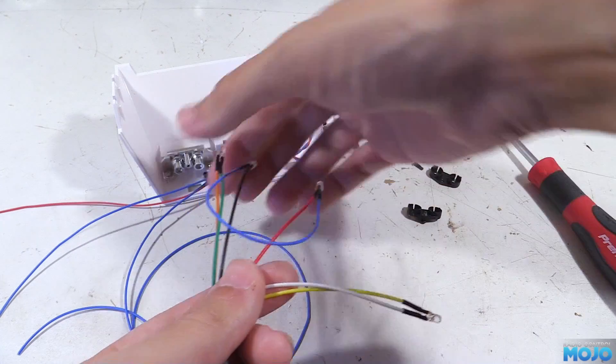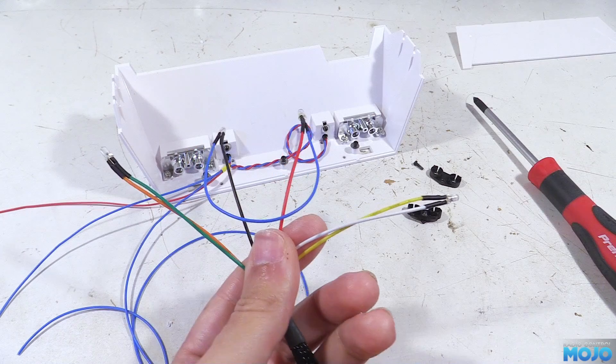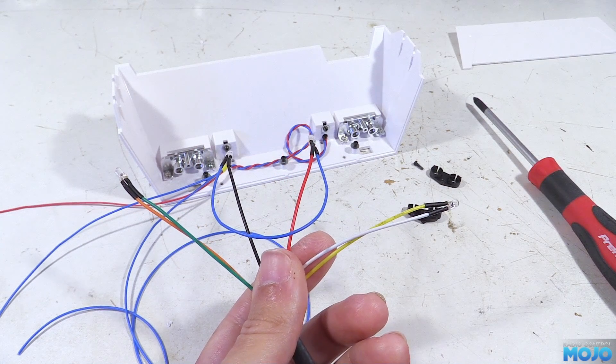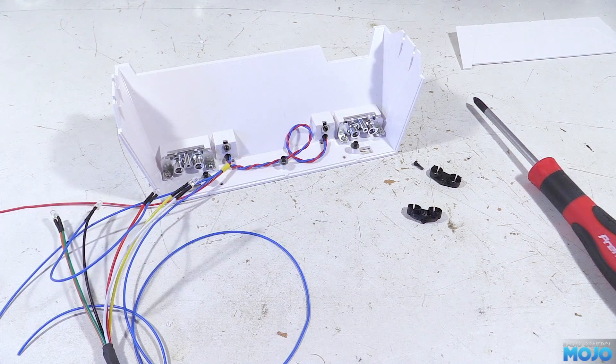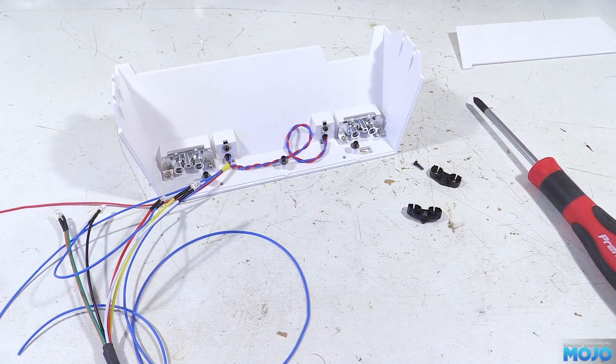At the other end there's a 2.5mm pitch JST that plugs into the trailer light connector on the MFC. The outputs are constant current so there's no need for resistors, it's just a direct connection.